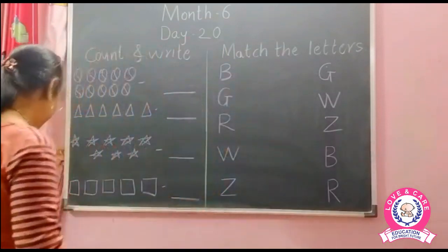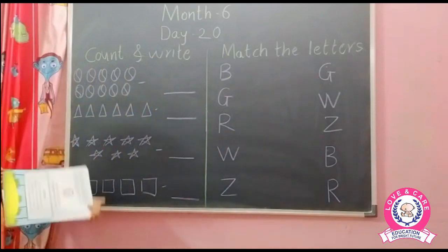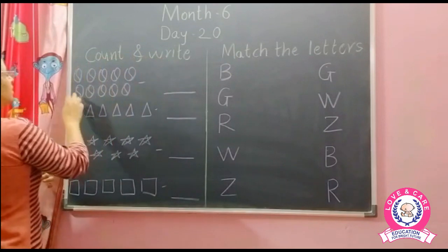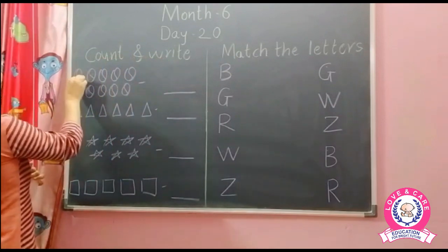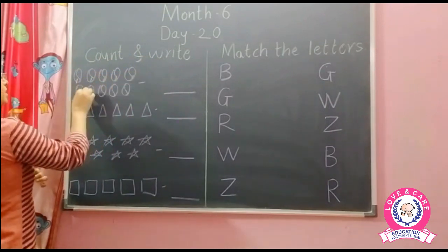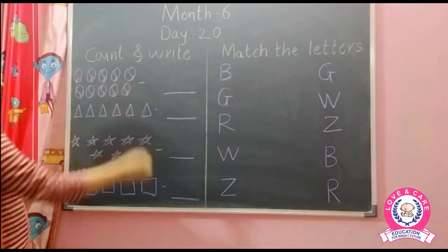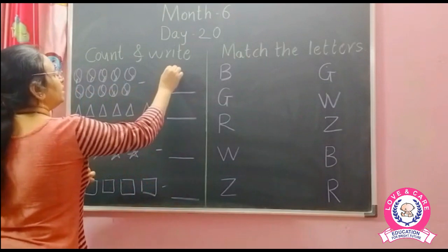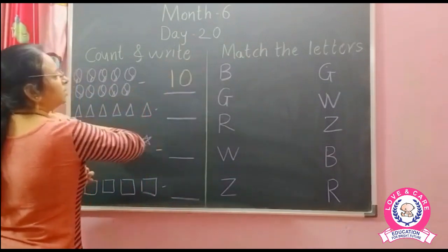Look at the board. Look here. Count and write. First, what are these? Balls. So count the balls: 1, 2, 3, 4, 5, 6, 7, 8, 9 and 10. How many balls? 10 balls. So write number 10 — 1, 0, ten.